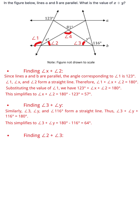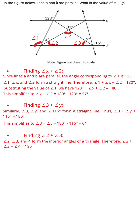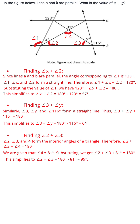Step 3: Finding angle 2 plus angle 3. Angles 2, 3, and 4 form the interior angles of a triangle. Therefore, angle 2 plus angle 3 plus angle 4 equals 180 degrees. We are given that angle 4 is equal to 81 degrees. Substituting, we get angle 2 plus angle 3 plus 81 degrees equals 180 degrees, which simplifies to angle 2 plus angle 3 equals 99 degrees.